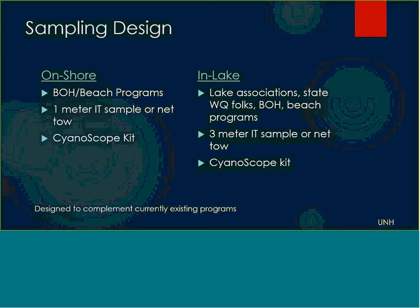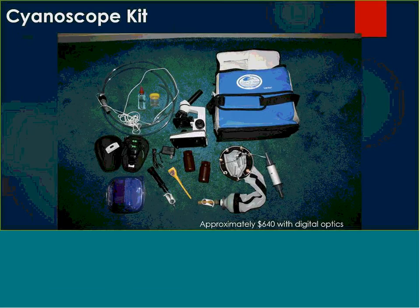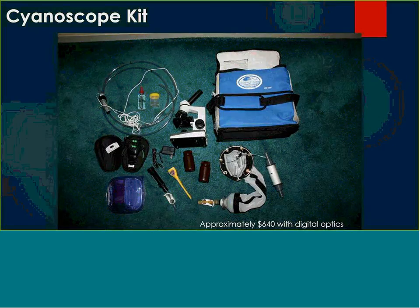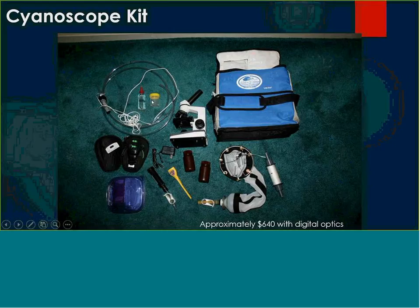It was geared to complement currently existing monitoring programs as an add-on if folks saw fit to incorporate it. We developed these Cyanoscope kits — simple tools, low cost. Currently we're looking at $640 for this kit if you include the digital optics for the microscope. The kit basically includes the integrated tube, some DI spritzers, a carrying case, and a student microscope that we found for less than $100. It's battery-operated so you can use it in the field. We've enhanced it a little bit.